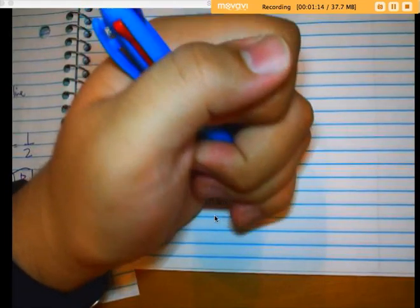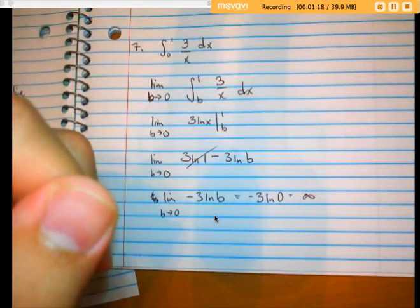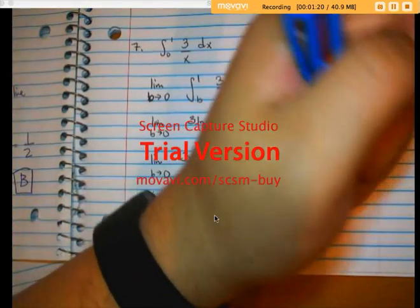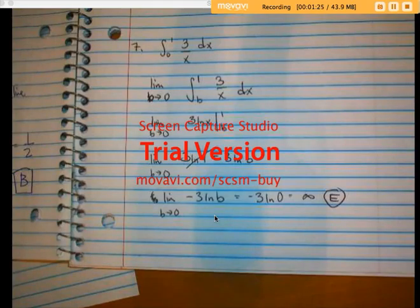Which is negative 3 times the natural log of zero, which gives me infinity. That ought to be my answer. Hopefully my answer is E. Checking number 7... yes, good deal!